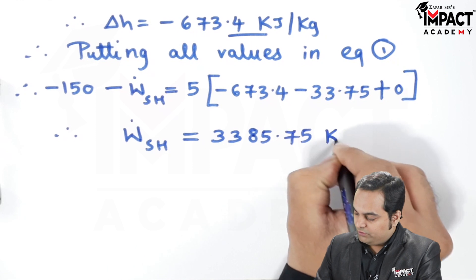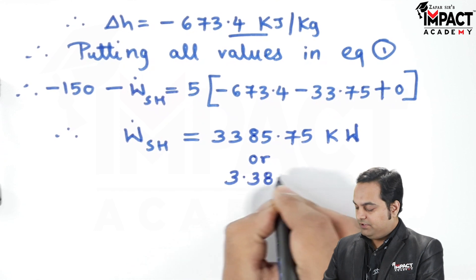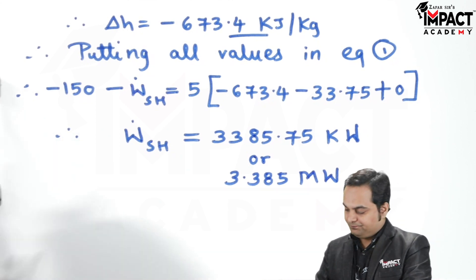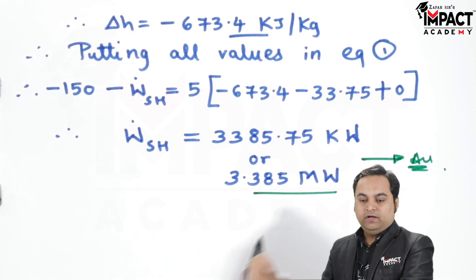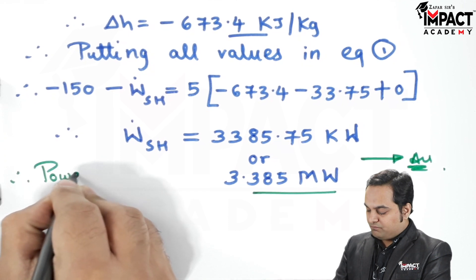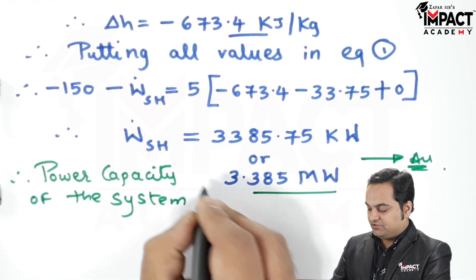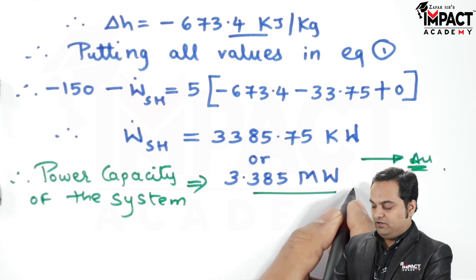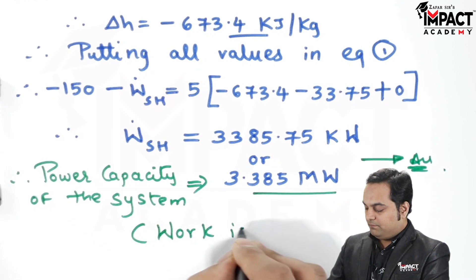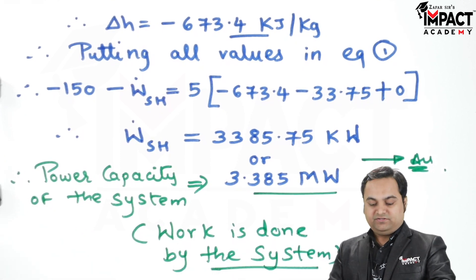The answer is 3385.75 kilowatts, or dividing by 1000, that is 3.385 megawatts. Therefore the power capacity of the system is 3.385 megawatts. Since the answer is positive, it means work is done by the system. If the answer were negative, it would mean work is done on the system.